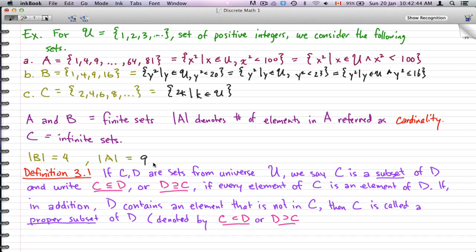If, in addition, D contains an element that is not in C, then C is called a proper subset of D. And that is denoted by C ⊂ D, where U is pointing to D, and there are no bars under that U.